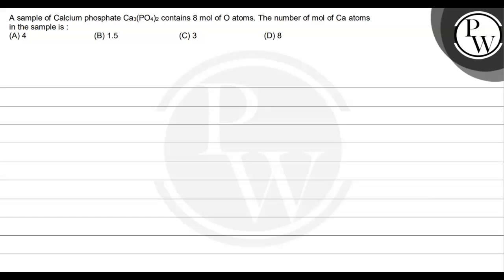Hello, let's see this question. The question says a sample of calcium phosphate Ca3(PO4)2 contains 8 mol of oxygen atoms. The number of mol of calcium atoms in the sample is, and the options are 4, second option is 1.5, third option is 3, and fourth option is 8.